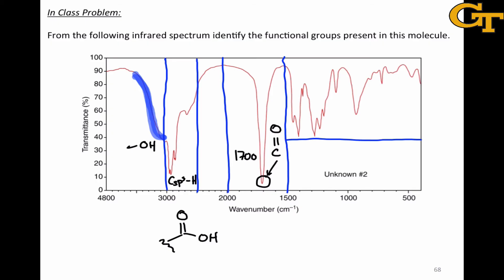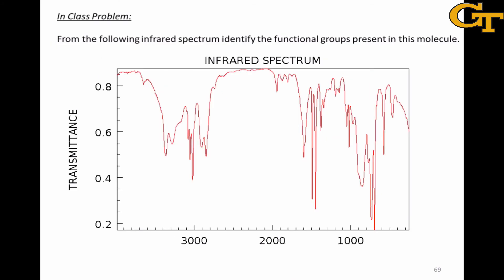In this final example, we're seeing a lot of action in the fingerprint region along with the typical sorts of peaks we see around 3000 for CH stretches and things north of 3000 for heteroatom H stretches.